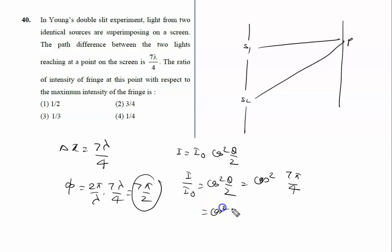Again you will write it is cos squared, then it can be written as 2 pi minus pi by 4, because 2 pi minus pi by 4 is 7 pi by 4.